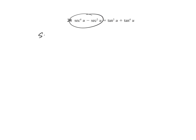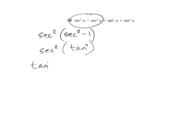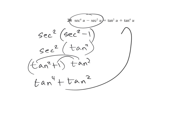Looking at these, since they're different exponents, factor out a secant squared — we get secant squared minus 1. Secant squared minus 1 is tangent squared. So we have secant squared times tangent squared. Secant squared is tangent squared plus 1, times that tangent squared. Distributing: tangent to the fourth plus tangent squared, which is what we have.